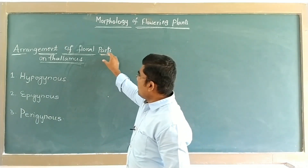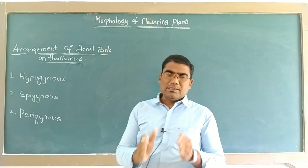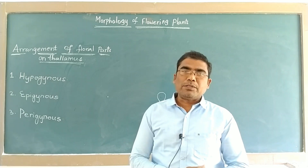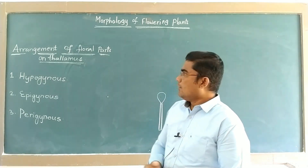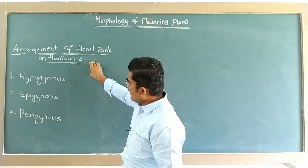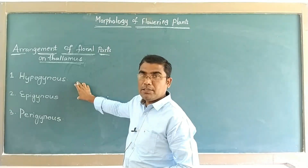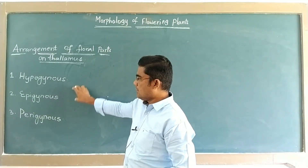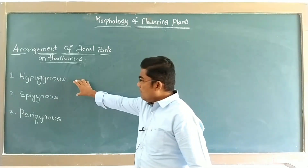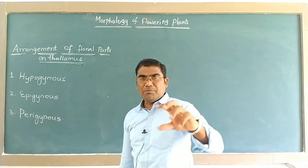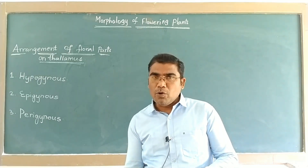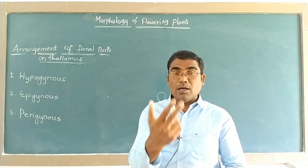Here, arrangement of floral parts on the thalamus — but this arrangement is mainly considered with respect to the position of the ovary. Based on the arrangement of floral parts on the thalamus, we classify the flowers into three groups: hypogynous, epigynous, and perigynous. This classification is mainly based on the arrangement of other floral parts with respect to the ovary on the thalamus.